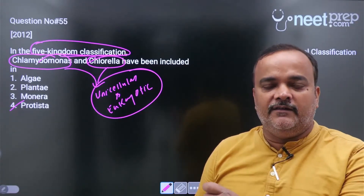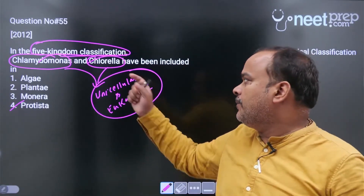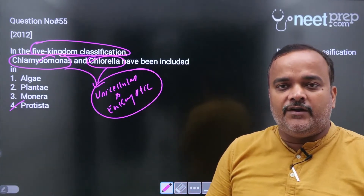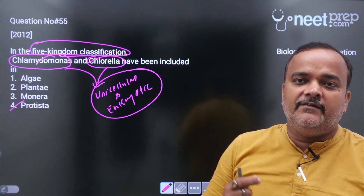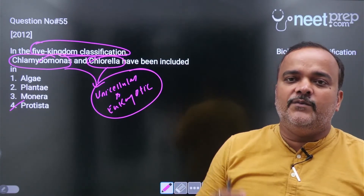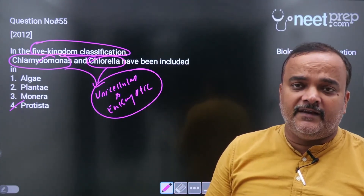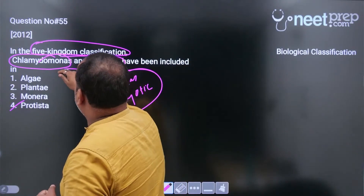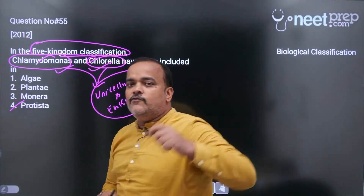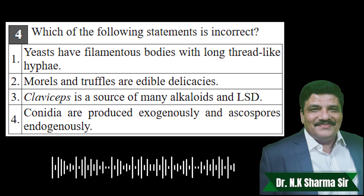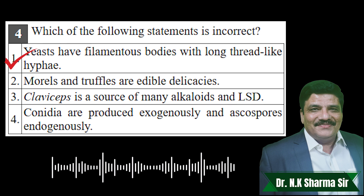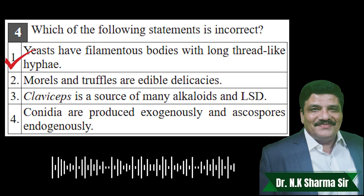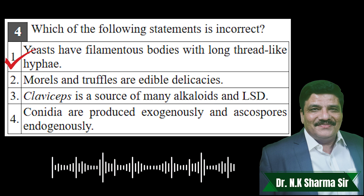Some people say this is a plant, it is an alga. But because it is unicellular eukaryote, in NCERT classification we will always place it in Protista. However, if the question asks which kingdom Chlamydomonas and Chlorella belong to, they are unicellular algae — option one is correct. These are unicellular, so they don't have filamentous bodies or long thread-like hyphae.